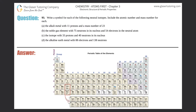Number 93: write a symbol for each of the following neutral isotopes, including the atomic number and mass number for each. We have parts a through d, so I'm going to put a through d on the left-hand side.